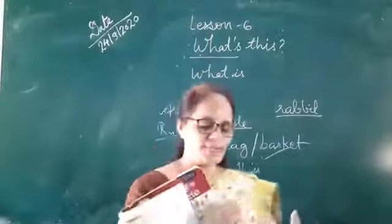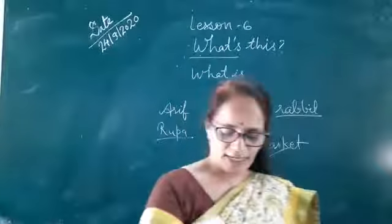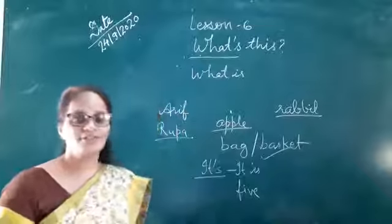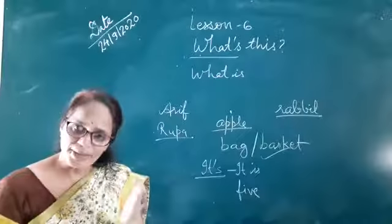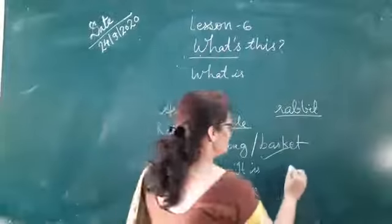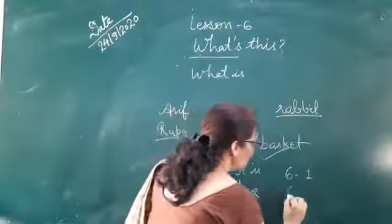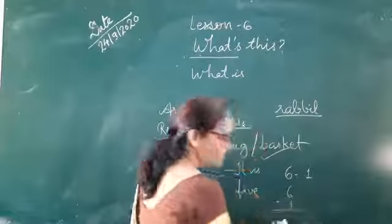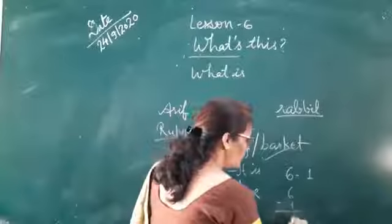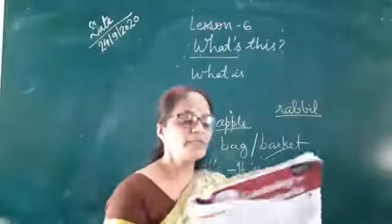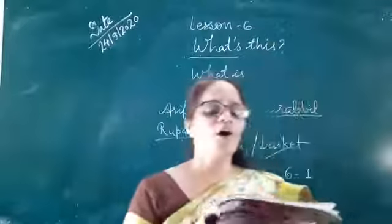Agar six sweets mein se ek sweet abhi kha lenge, to how many sweets are left? Agar six minus one, six sweets mein se one sweet abhi kha liya, how many sweets are left? Five. So this chapter is about the word this.